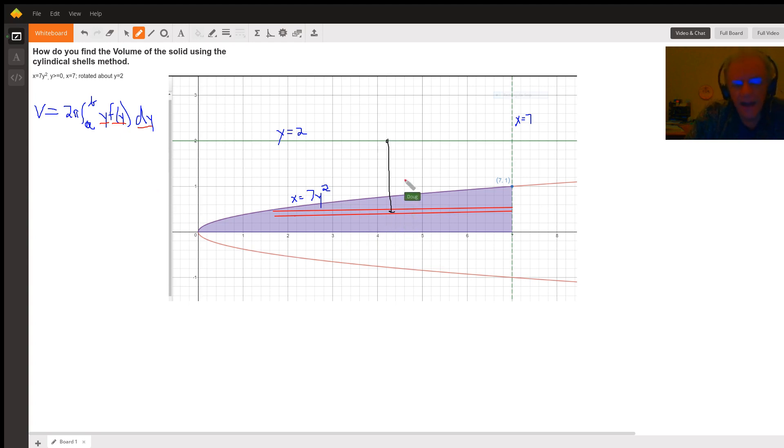So how do we represent the height, the average radius? Well, for any y value, and by the way, when you create a typical shell, you can picture infinitely many of them with their width along this line right here. And this kind of tells you that you're going to be integrating with respect to y.